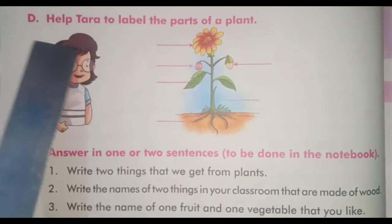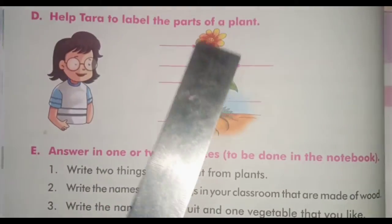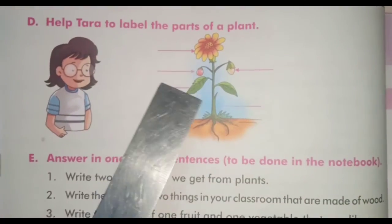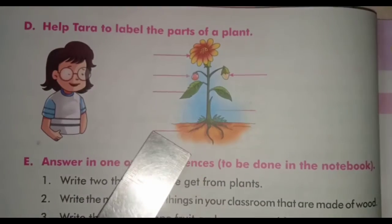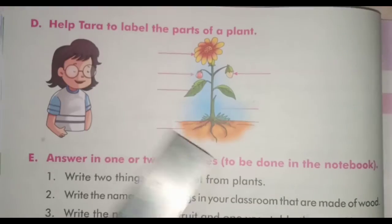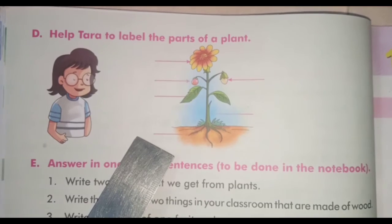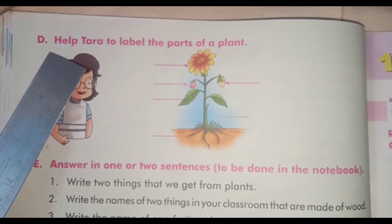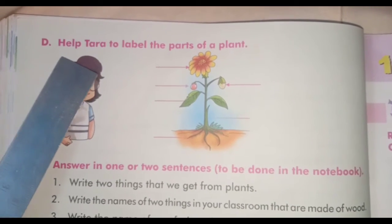Let's do question number 3: Help Tara to label the parts of a plant. In the previous class I have taught you the parts of a plant, so now you can label it easily. Students, first you have to draw the plant's picture in your copy, then you have to name the parts of a plant. I hope you must have understood this topic well, so you have to do this question in your copy.